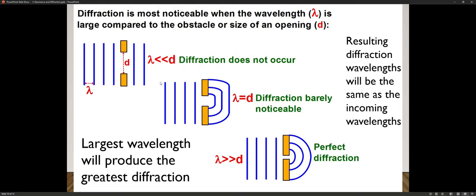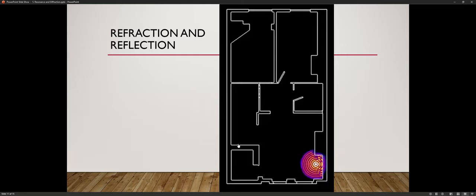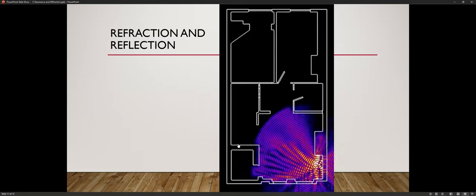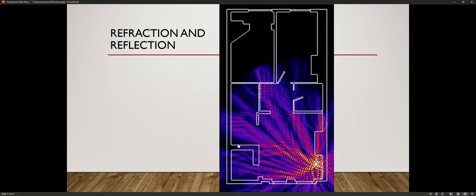And so what two properties you have to notice, your wavelength does not change. As you go through the opening, your wavelength does not change. Resulting diffraction wavelengths will be the same as the incoming wavelengths. And the largest wavelengths will produce the greatest diffractions. So these are two concepts you actually have to understand. Actually three. The thing with the slit openings, the resulting diffraction wavelengths, and the largest wavelengths. These are three things you have to realize, or rather remember.